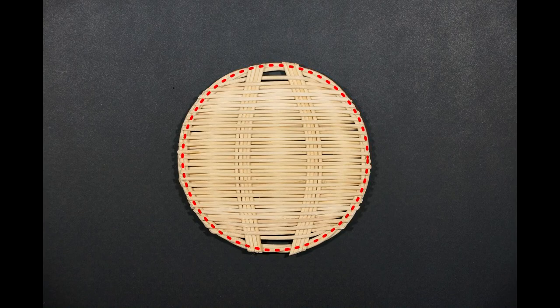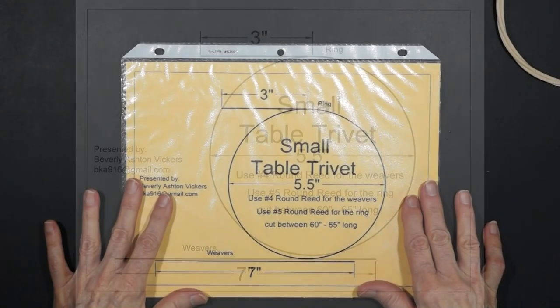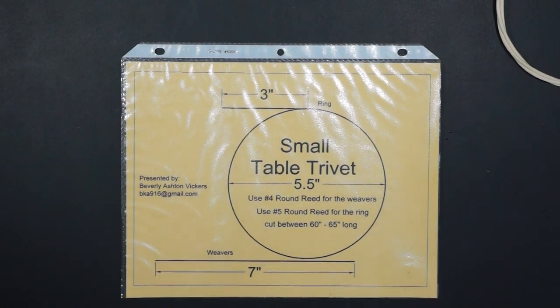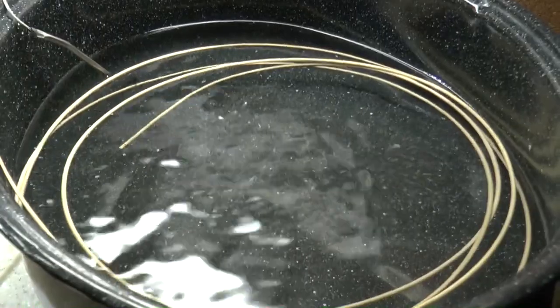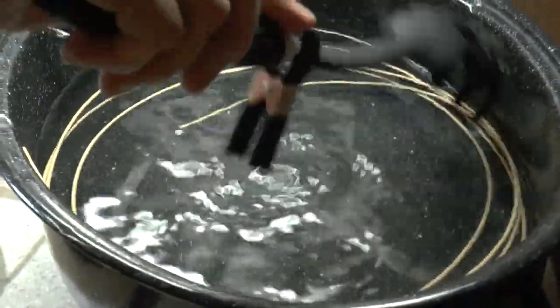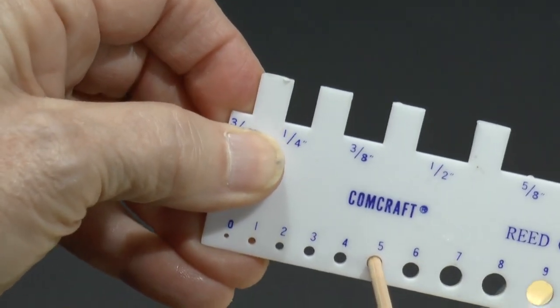We will start by making the ring. This graphic will help us size everything as we get started. I've put it in a document protector to keep it from getting wet and to keep the ink from transferring from the paper to the reed. We'll begin by taking the number 5 round reed that has been soaking in water long enough to make it pliable. You can verify the size of the reed by using your gauge.